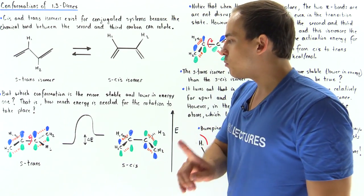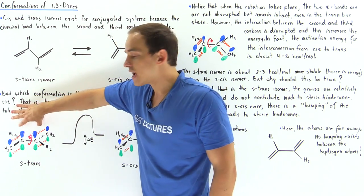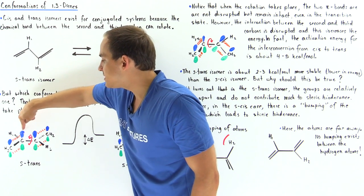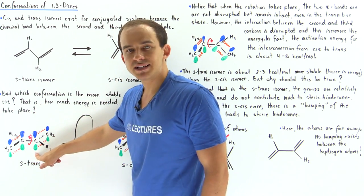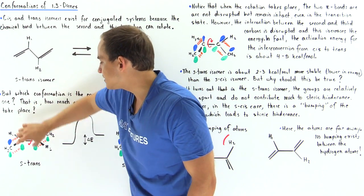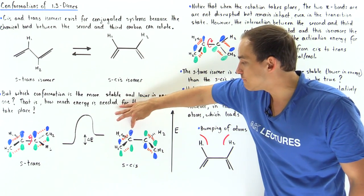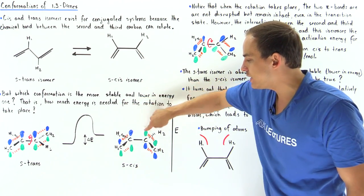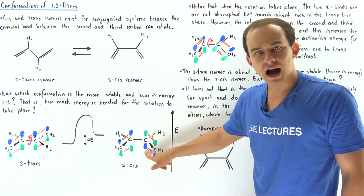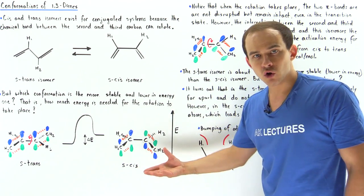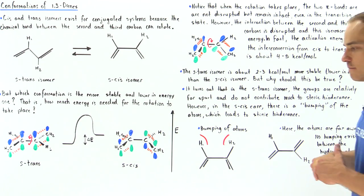Notice an important difference between the S-trans and S-cis: in the S-trans, these two lobes have the same sign and these two lobes have the same sign — positive (blue) and negative (green). But in the S-cis, we have a blue and a green, and a green and a blue — positive, negative, negative, positive. This will play a role in the stability of these isomers.